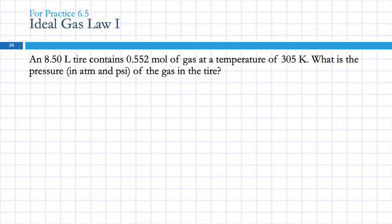So let's do an ideal gas problem. An 8.50 liter tire contains 0.552 moles of gas at a temperature of 305 Kelvin. What is the pressure in atmosphere and PSI of the gas in the tire? Reading the problem, let's highlight the numbers and see what the question is. We want the pressure in atmosphere and PSI. This problem doesn't say anything about stuff changing. The problems we did in the last lecture had volume changing or temperature changing. So nothing's changing here.